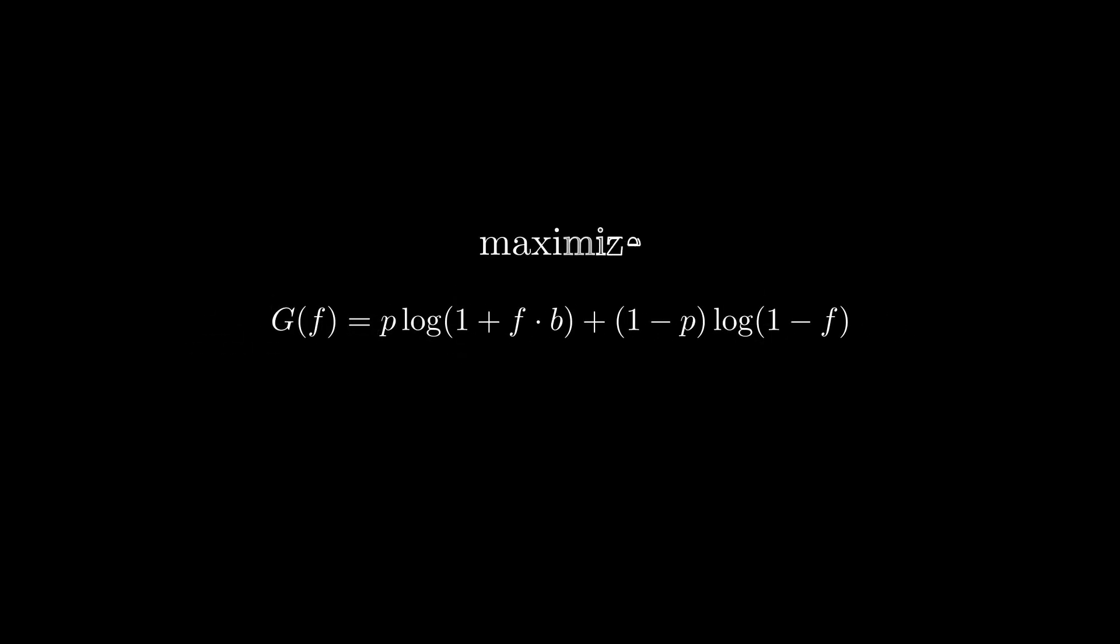But how do we maximize this growth? Basic calculus tells us that we can do that by taking the derivative of this equation and setting it equal to zero. Using the chain rule for the logarithm, the first part ends up looking like this and the second part doing the same like this.